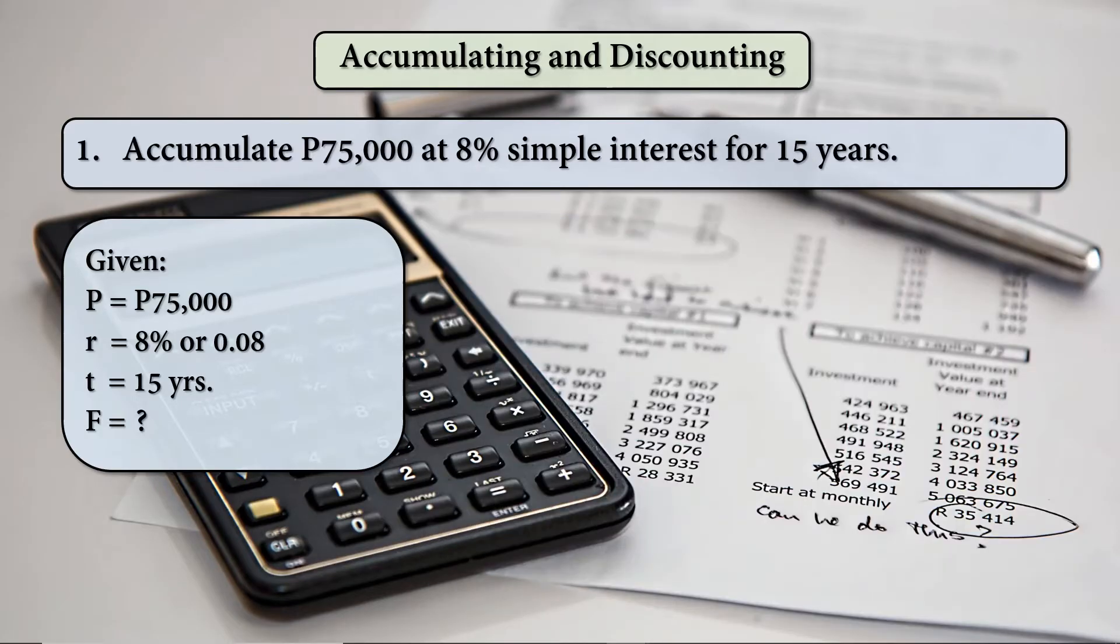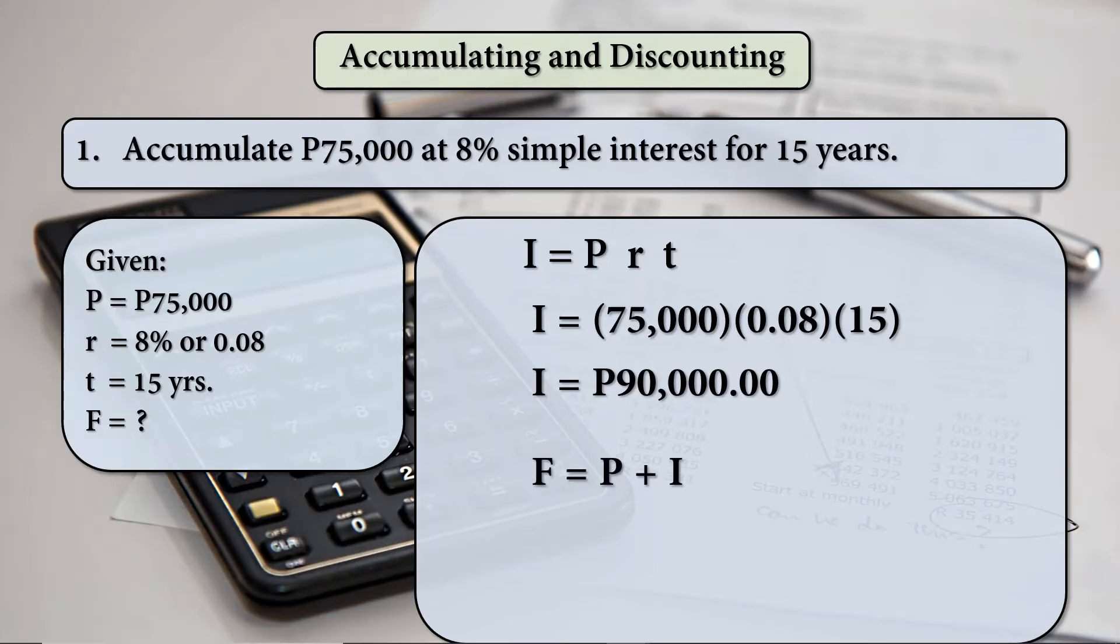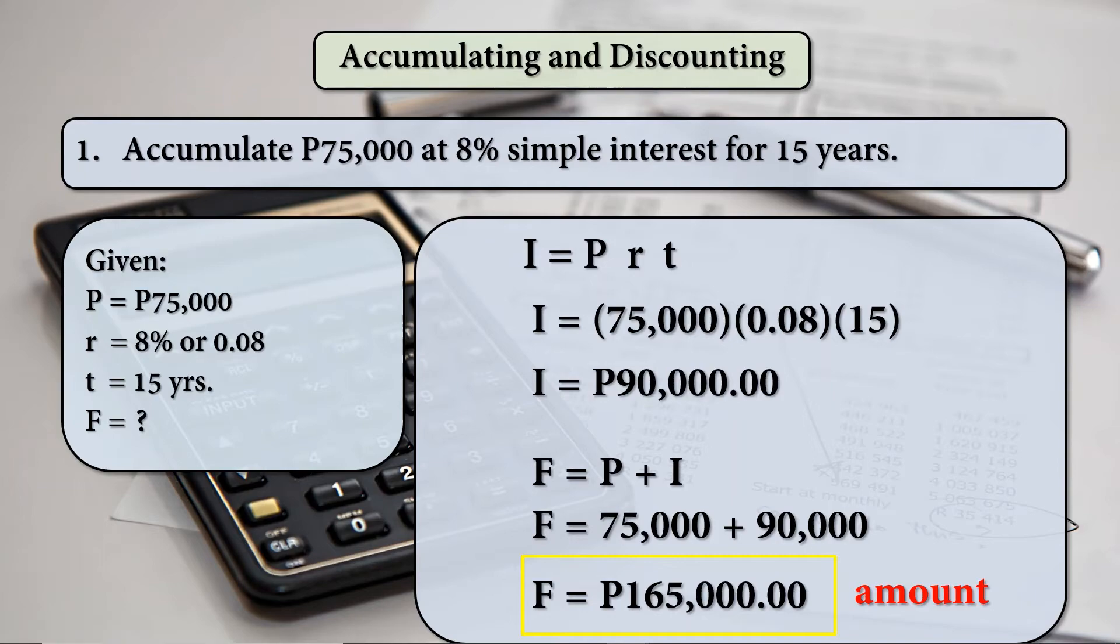Or another method: we have to find the value of I in order to find the value of F. So I equals PRT. Substitute the three values, that results to 90,000 interest. So for F, F equals P plus I. P is 75,000 and I is 90,000, so F equals 165,000. That is called the future value or the amount.